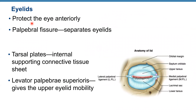Eyelids protect the eye anteriorly and are also called palpebria. Between the superior and inferior palpebria we have the palpebral fissure — right here where you can open up your eyelids — and the palpebral fissure separates the eyelids. We also have tarsal plates shown here — this is upper tarsus and this is lower tarsus.